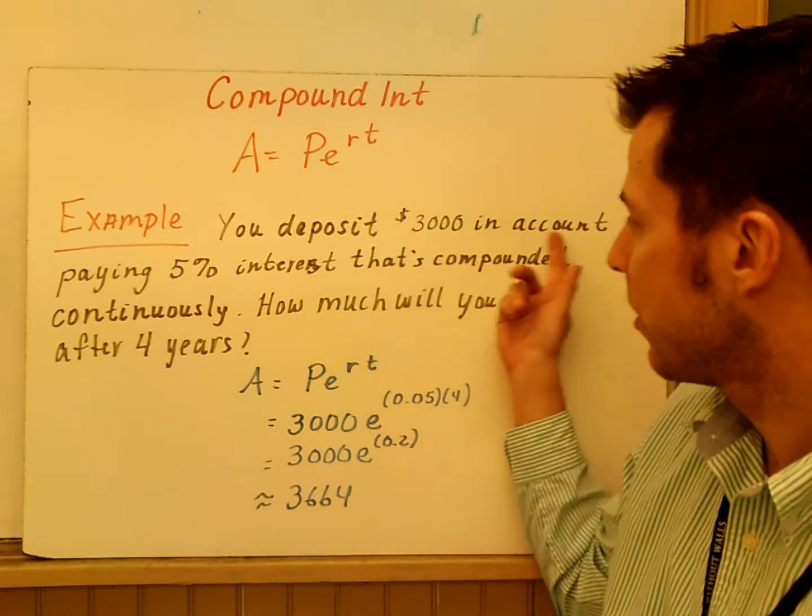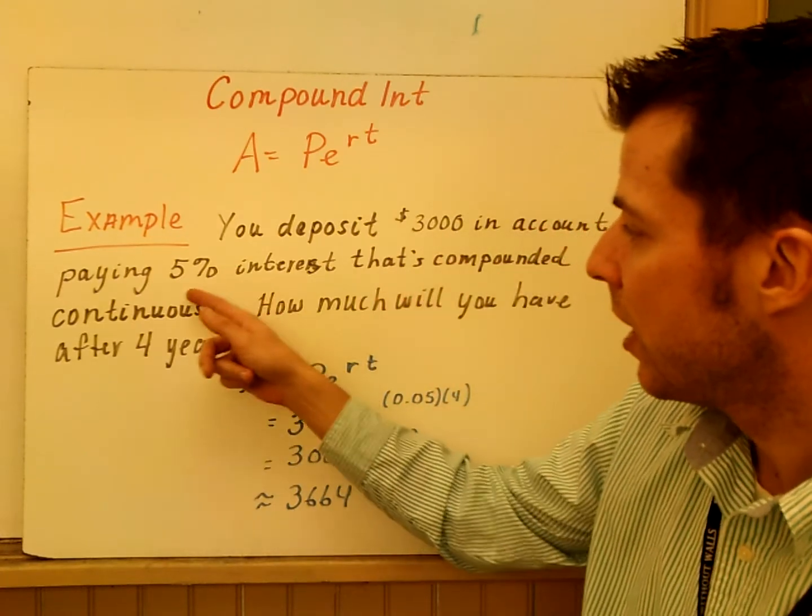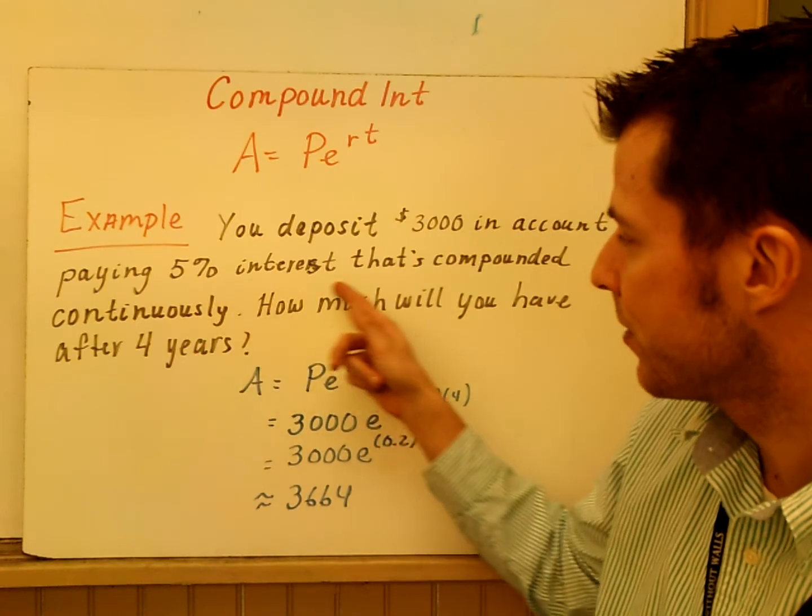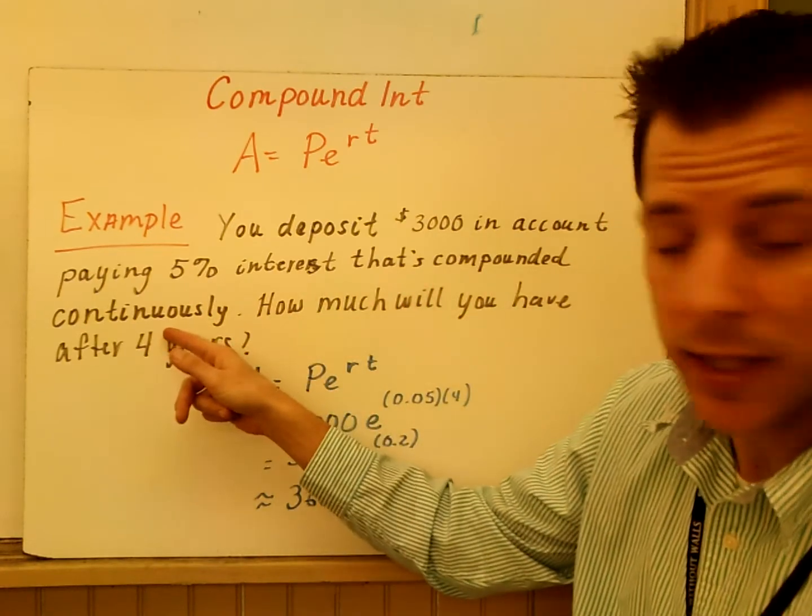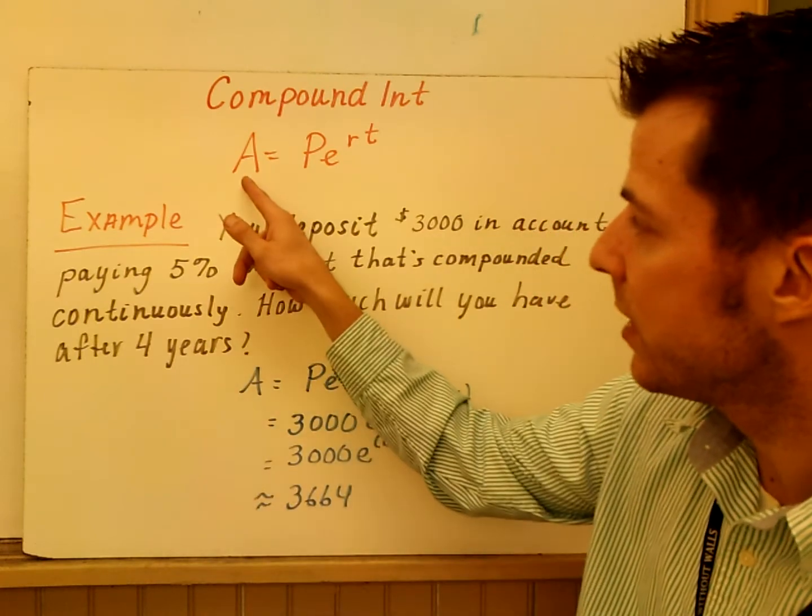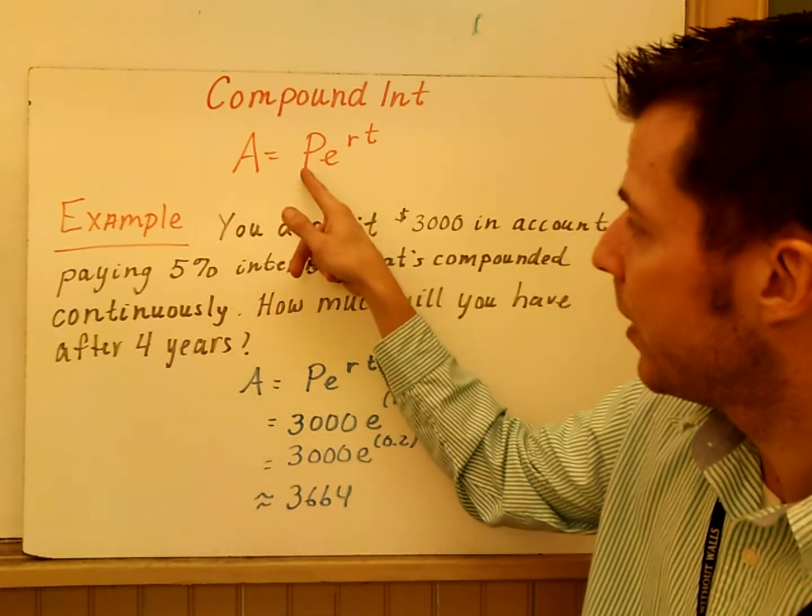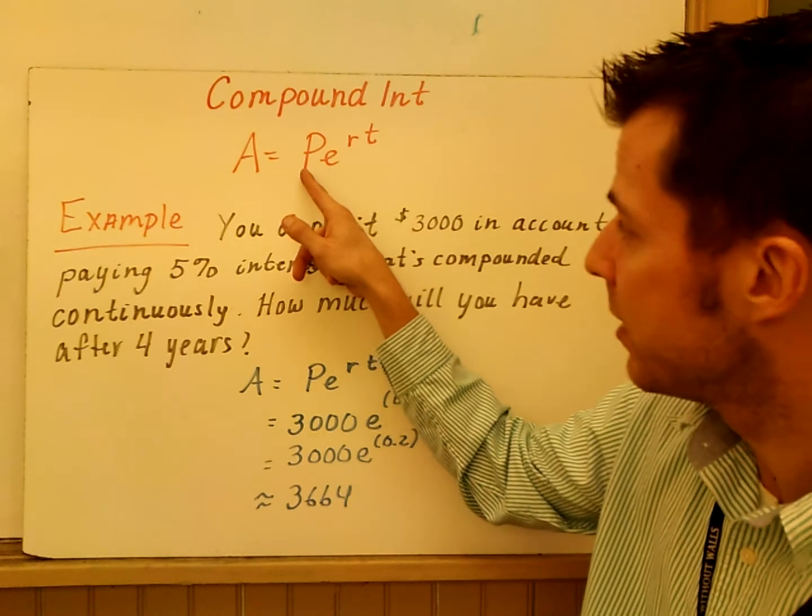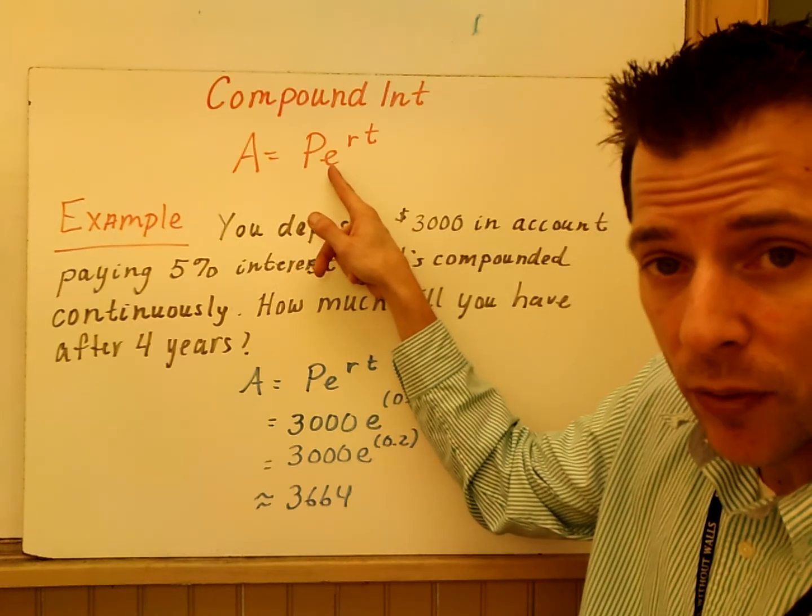If I deposited $3,000 into this, paying 5% interest that's compounded continuously, how much will you have after four years? A is the amount after T years. P is the principal, the amount you invested. E is a number, it's 2.71, and we'll talk more about that in class.